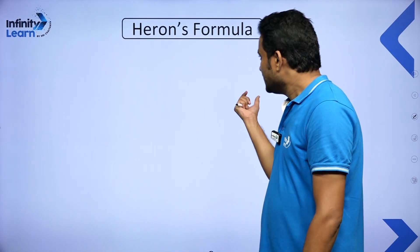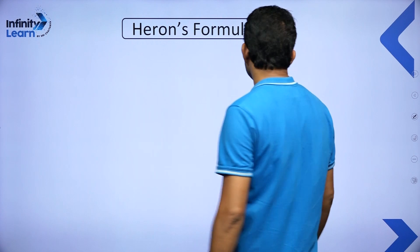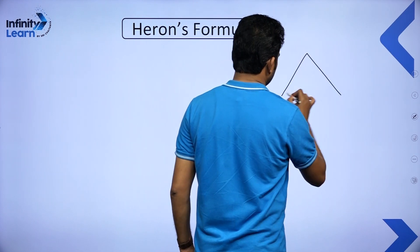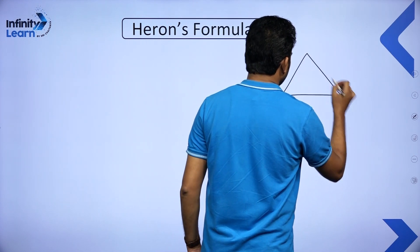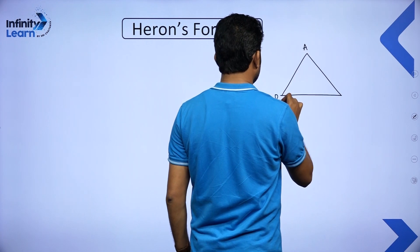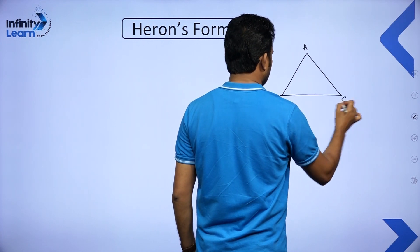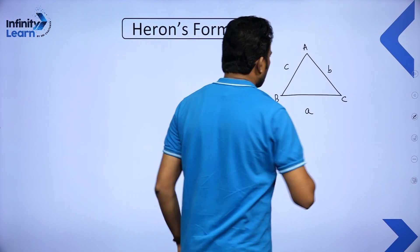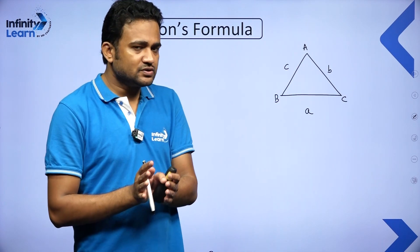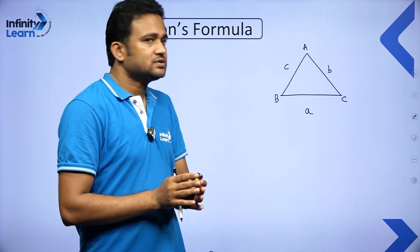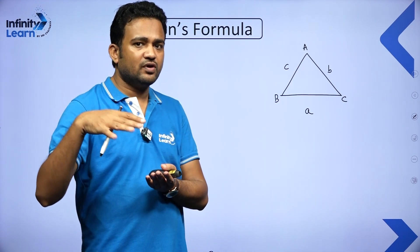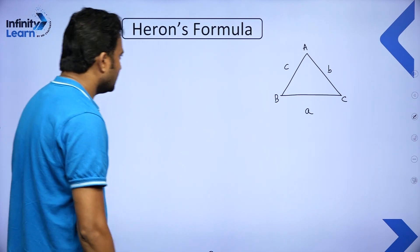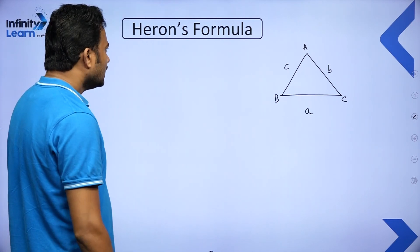Let us quickly recall what Heron's formula is. Suppose we have a triangle ABC and the measurements of sides are A, B and C. Since altitude is not known for this triangle, we cannot use the basic formula that is half base into height. So we will use another formula called Heron's formula.